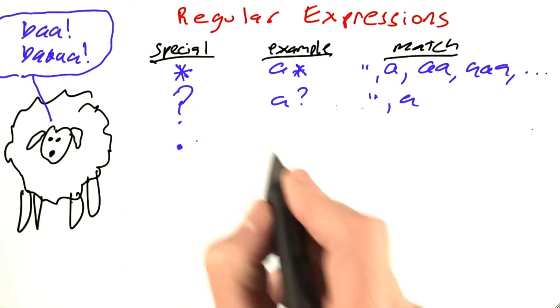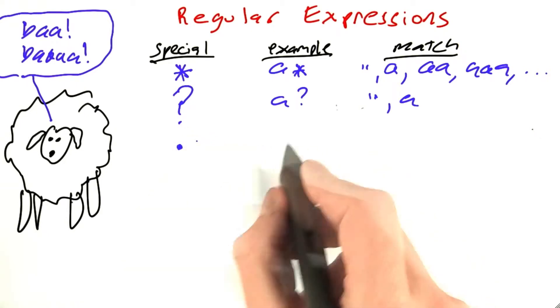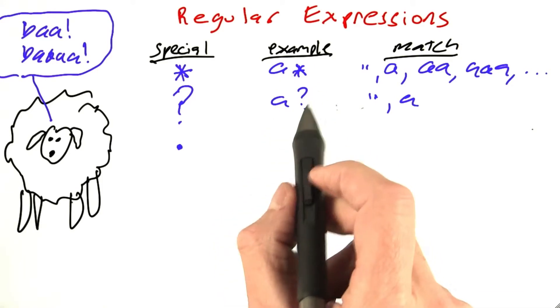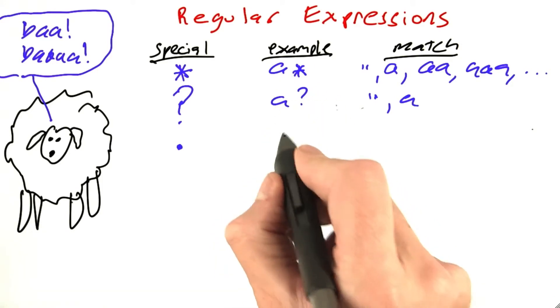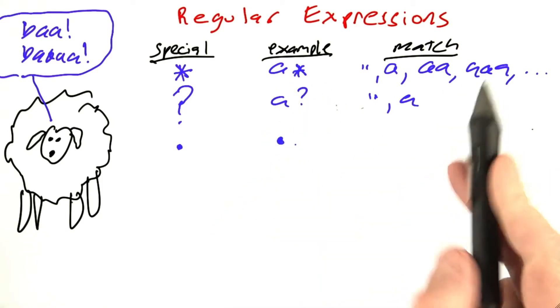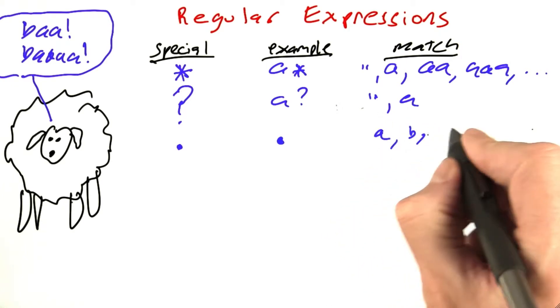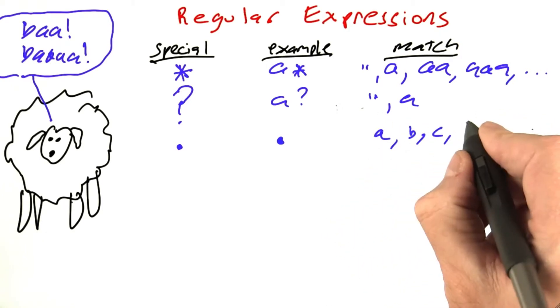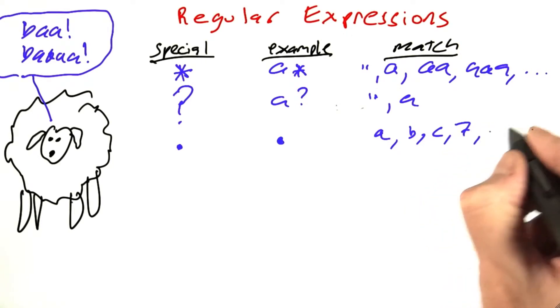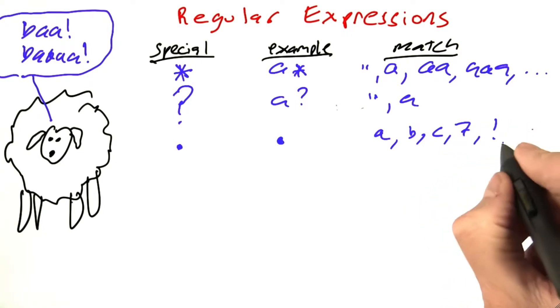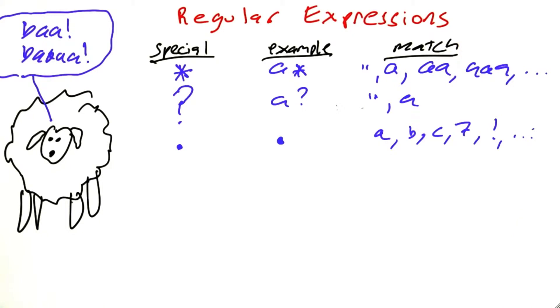Another special character is the dot or period, and that stands by itself. It doesn't have a two-character sequence. And so, for example, a dot can match the character a or the character b or c or 7 or exclamation point or any other single character. But it doesn't match the empty string, and it doesn't match a multiple-character string.